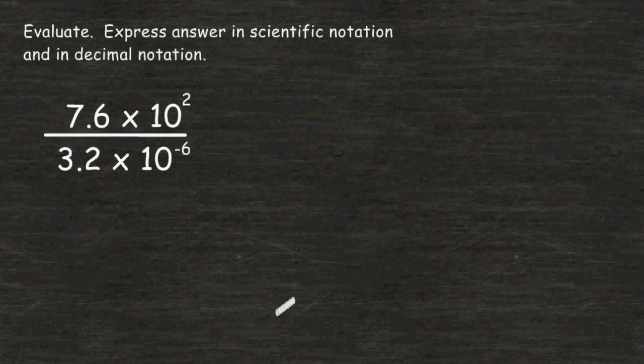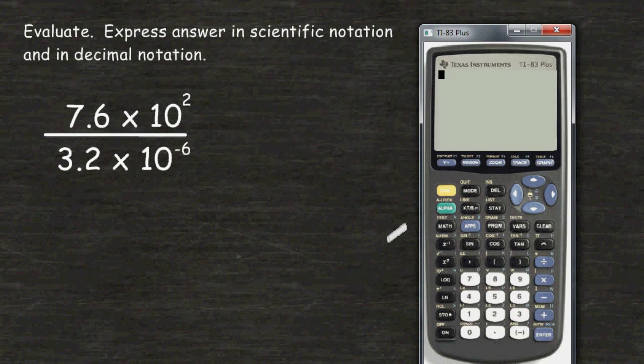And to speed things up a bit, let's just use a calculator. So let's input into the calculator 7.6 divided by 3.2, which gives us a quotient of 2.375.